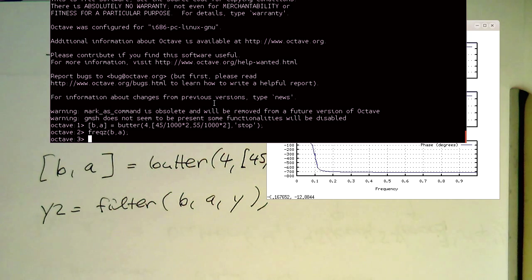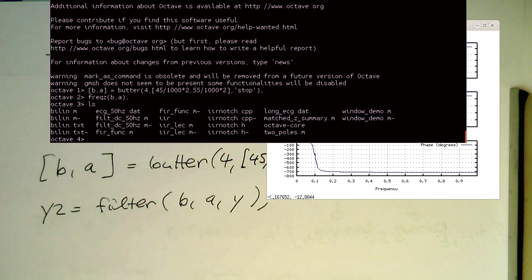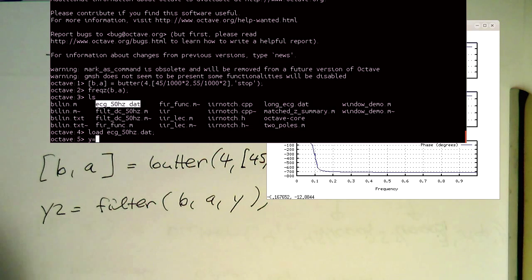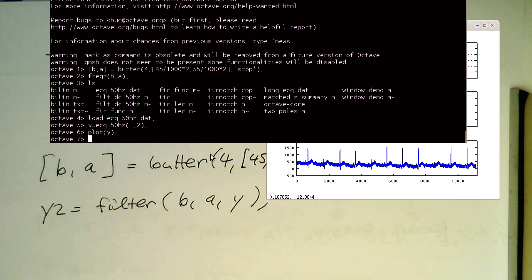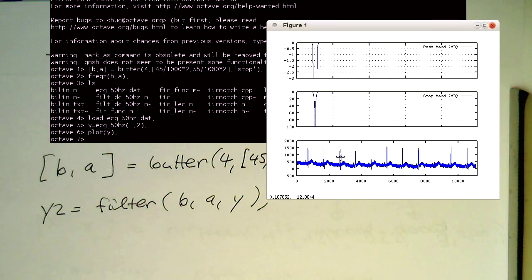So now we just need to load our ECG here. There should be a file here which is called ECG 50 Hz. So let's load this and extract our ECG from the second column. Plot Y. Let's see if we are getting this here. So that's our ECG here at the bottom and there's a bit of 50 Hz in there.